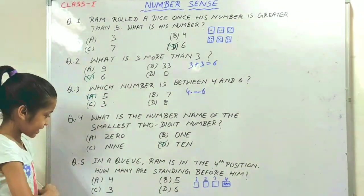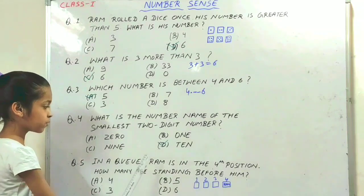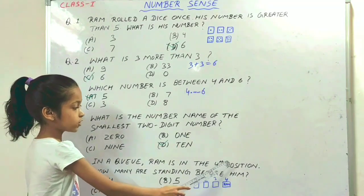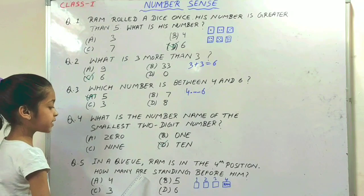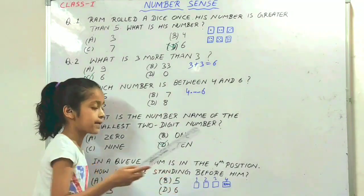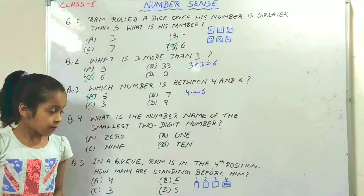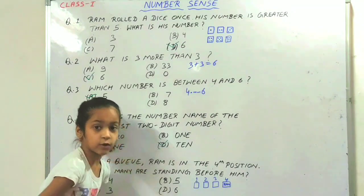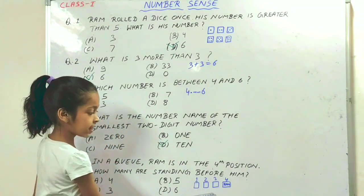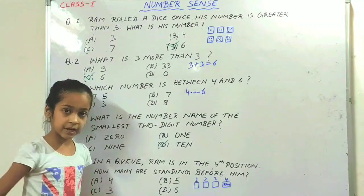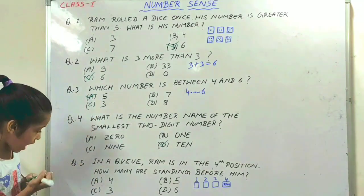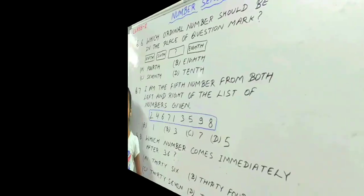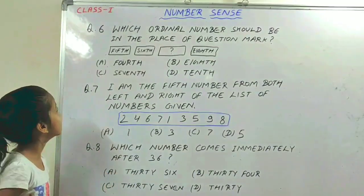The next question is: in a queue, Ram is in the 4th position. How many are standing before him? Here you can see, here is Ram. So before him, 3 people are standing. So the answer is 3.